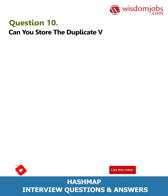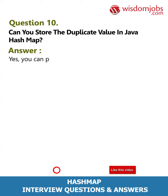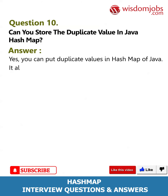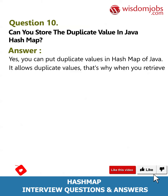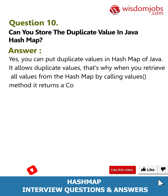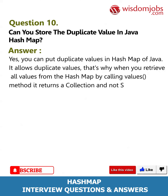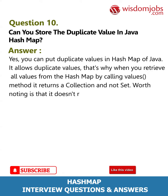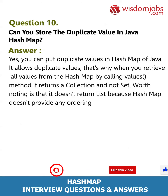Question 10: Can you store duplicate values in Java HashMap? Answer: Yes, you can put duplicate values in a Java HashMap. It allows duplicate values. That's why when you retrieve all values from the HashMap by calling the values() method, it returns a Collection and not a Set. Worth noting is that it doesn't return a List because HashMap doesn't provide any ordering guarantee for keys or values.